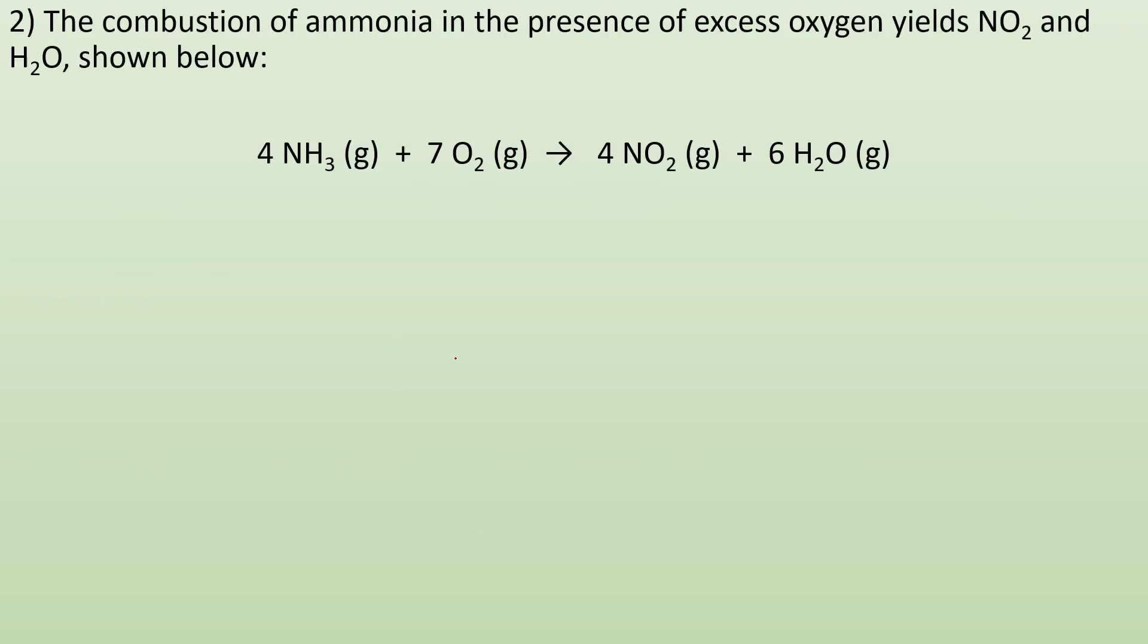Number two, the combustion of ammonia in the presence of excess oxygen yields NO2 and H2O shown below. So again, they give us the balanced chemical equation. Now the question is the combustion of 43.9 grams of ammonia produces how many grams of NO2?